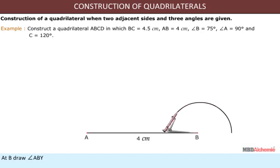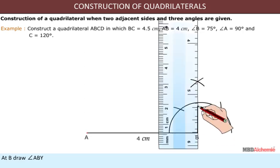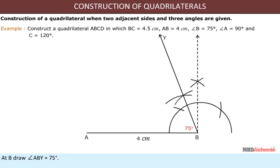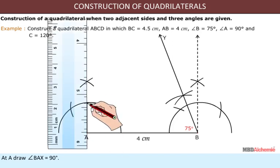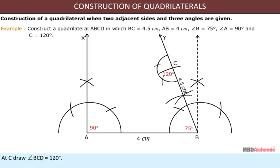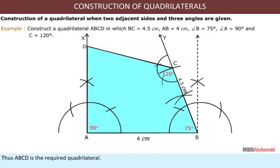At B, draw angle ABY = 75 degrees. At A, draw angle BAX = 90 degrees. From BY, cut off BC = 4.5 cm. At C, draw angle BCD = 120 degrees so that CD cuts AX at D. Thus ABCD is the required quadrilateral.